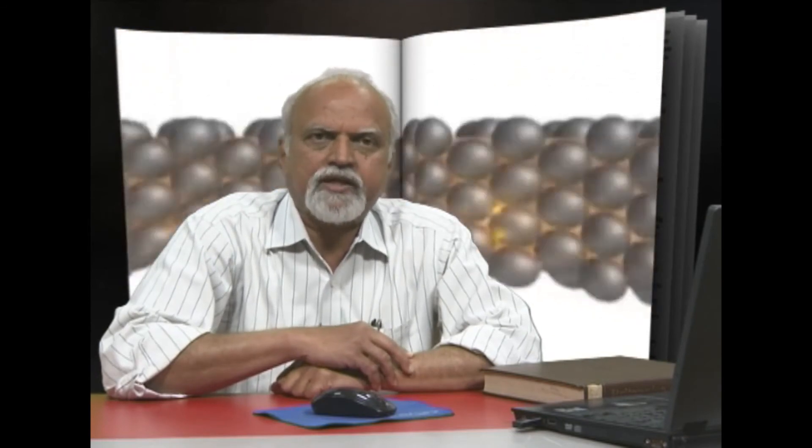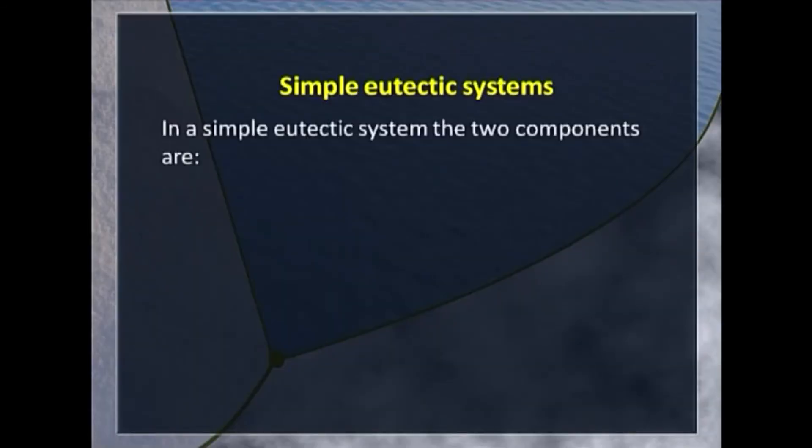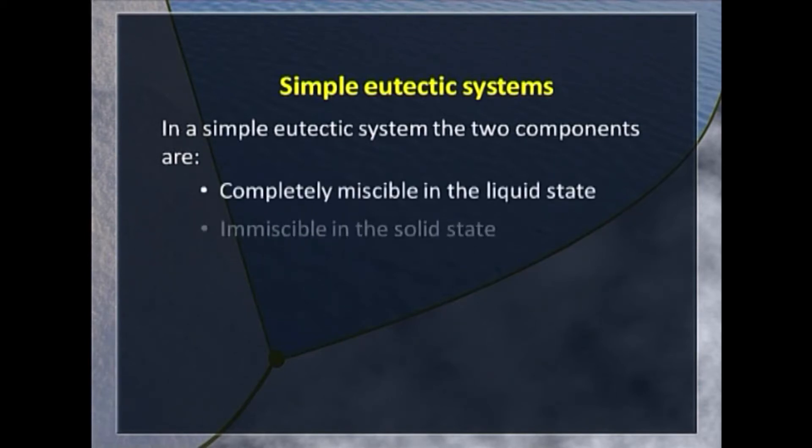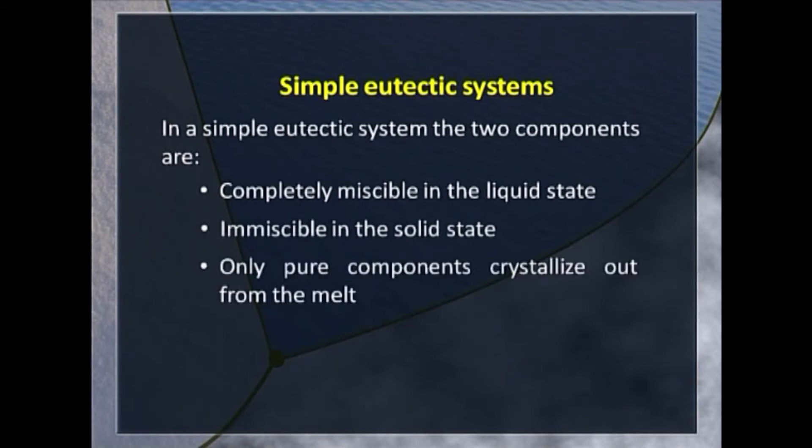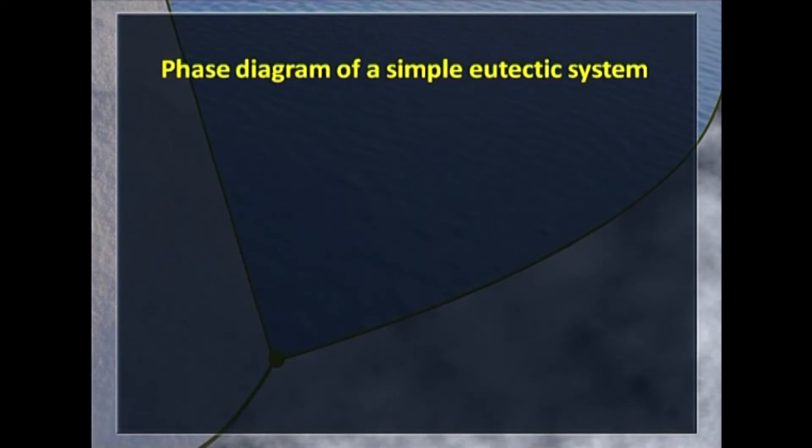Let us now take up very important systems that are simple eutectic systems. To form a eutectic system, the two components are completely miscible in the liquid state. They are immiscible in the solid state. If we cool the melt, only pure component A or pure component B crystallizes out.